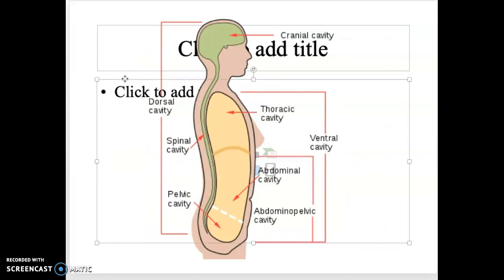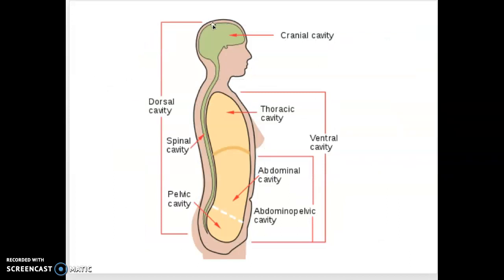Here we have some different body cavities. The dorsal cavity contains the brain and spinal cord, separated further into the cranial cavity and spinal cavity. The ventral cavity is the front of the body — the thoracic cavity contains the heart and lungs, the abdominal cavity contains the abdominal organs, and the pelvic cavity is mostly reproductive and urinary. The abdominal and pelvic cavities are often combined.